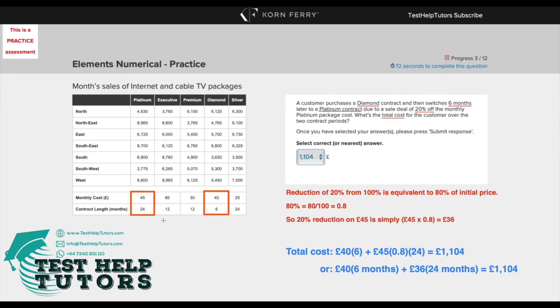So instead of paying £45 a month, this customer will be paying £36 a month for 24 months. Another way of solving this problem would simply be £40 times six months plus £36 at the special sale deal times 24 months, which also gives us £1,104.